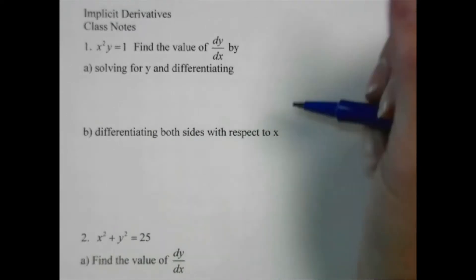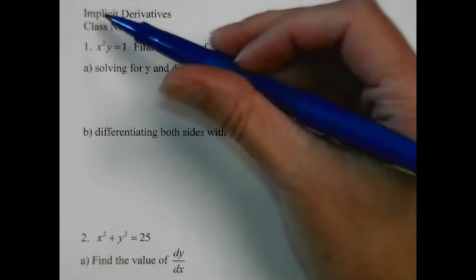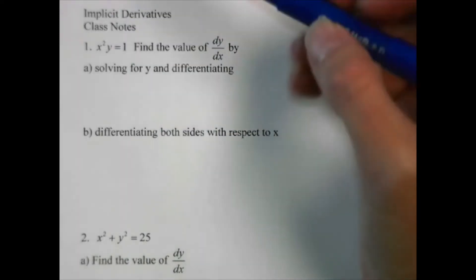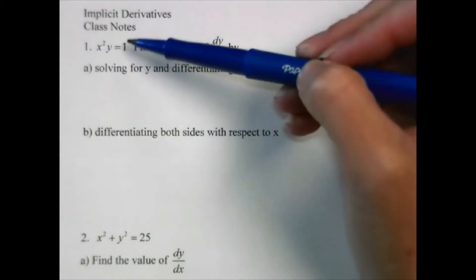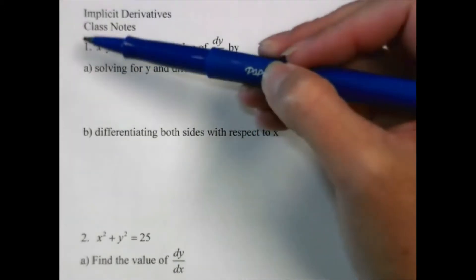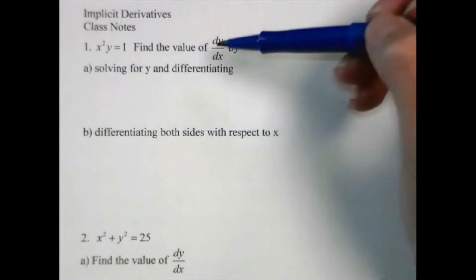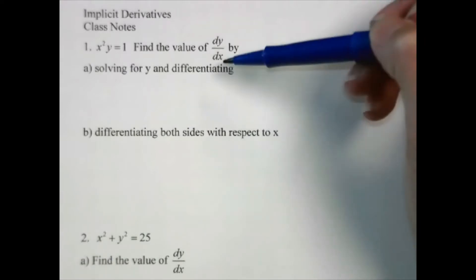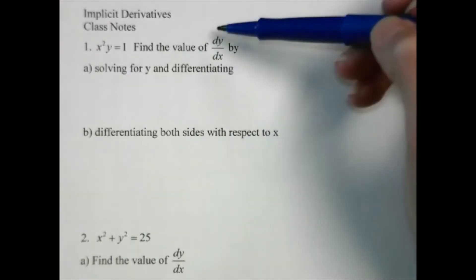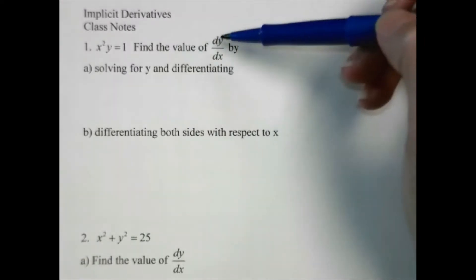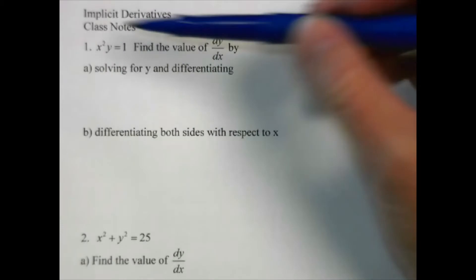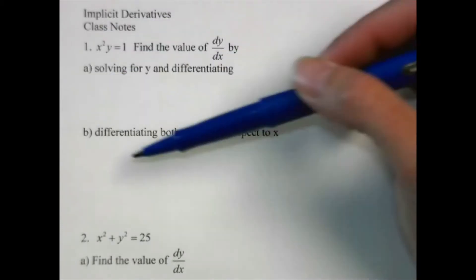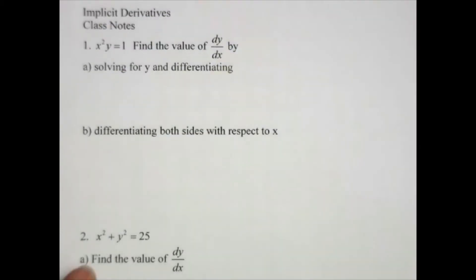Today we're going to be talking about implicit derivatives. This is going to be equations that involve more than one variable. The order of this matters — we're going to be taking the derivative of y with respect to x. We're going to do this first one in two ways.